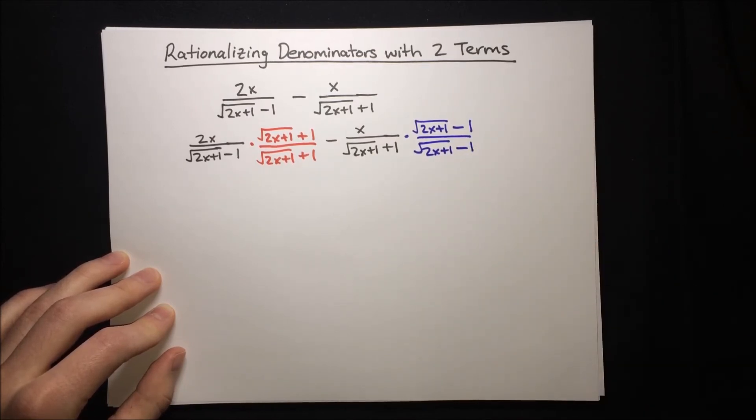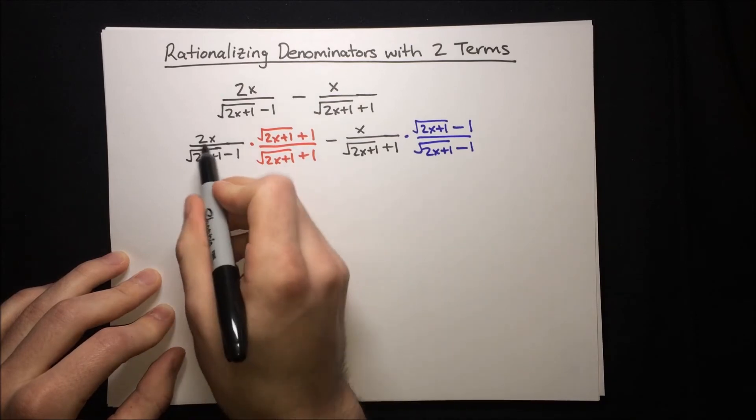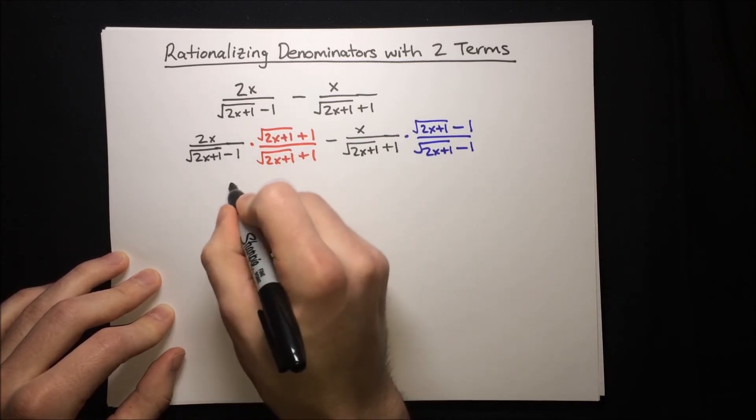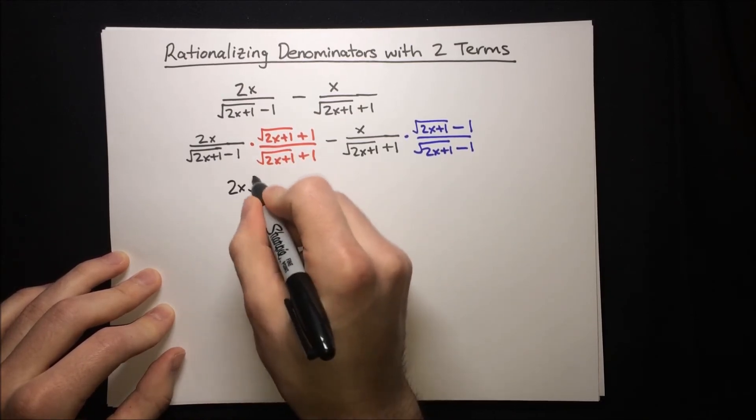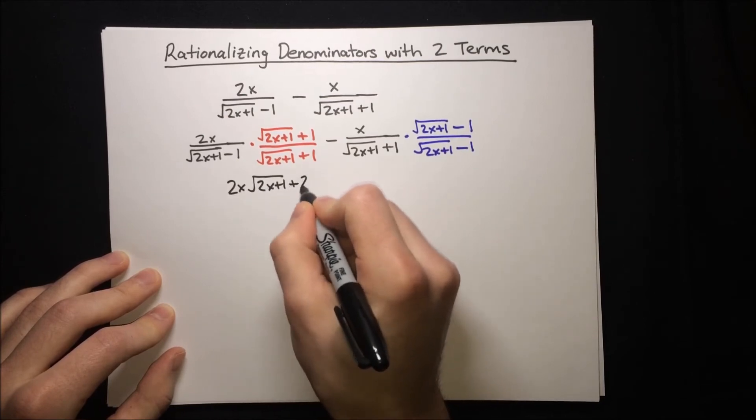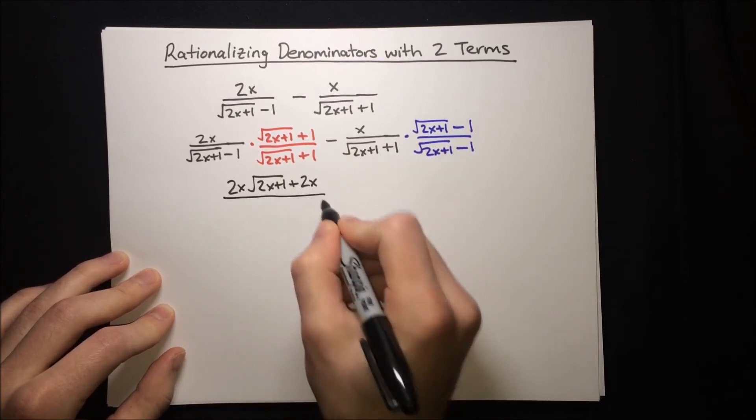Now we're ready to go ahead and carry out our multiplications. So multiplying here on the top, we've got 2x root 2x plus 1 plus 2x.